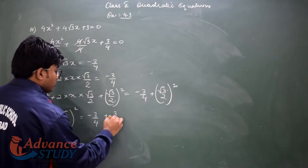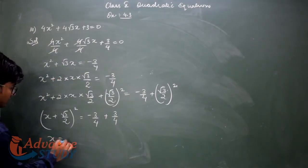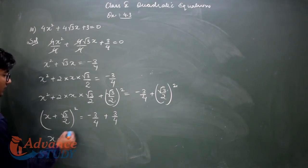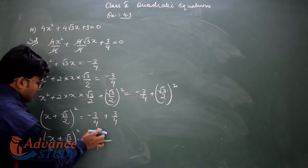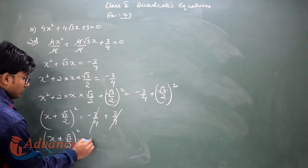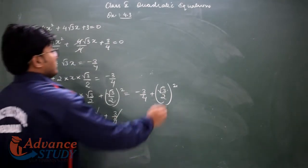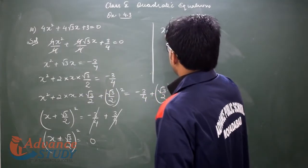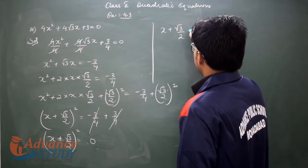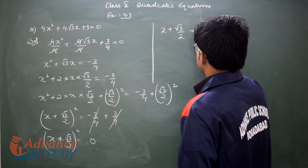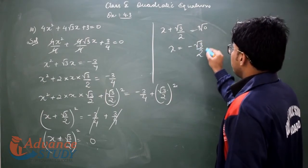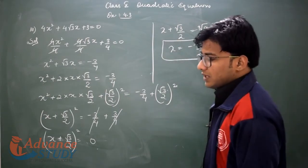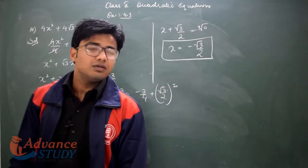So the result becomes 0 on the right side. Taking square root: x + √3/2 equals ±√0, which is 0. So x equals minus √3/2. Both plus and minus give the same answer. So x = -√3/2 is the root.